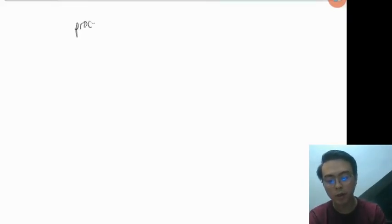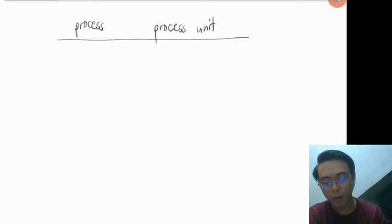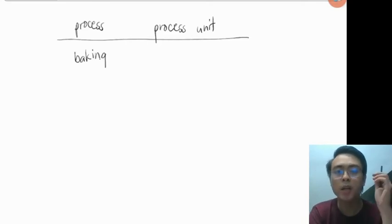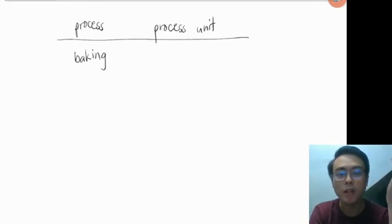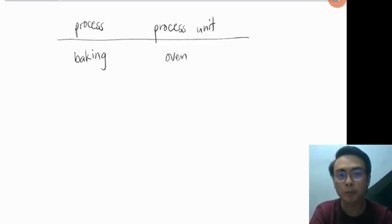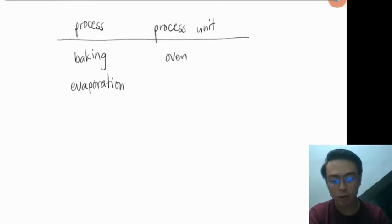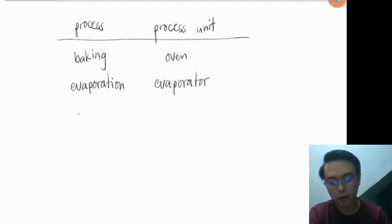To give examples: if the process is baking, like baking bread or cookies, the process unit is the oven — the equipment that allows us to perform the process. In more technical terms, if the process is evaporation, the process unit is an evaporator. If the process is drying, the process unit is a dryer, and so on and so forth.